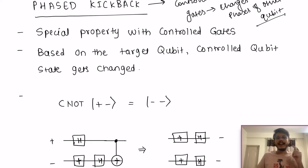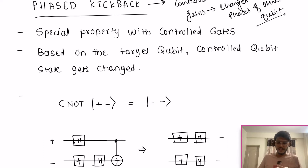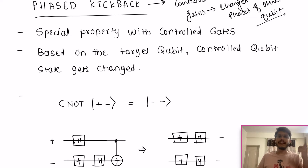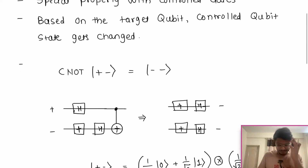I would highly recommend you to check my previous video on the CNOT gate before starting this video, because it is super important. If you remember, in the CNOT gate your target qubit phase gets changed based on the control bit — if your control qubit is set to one, your target qubit gets flipped. This is the reverse phenomenon: based on your target qubit, your control qubit gets changed — that's why it is called phase kickback.